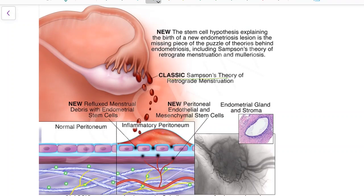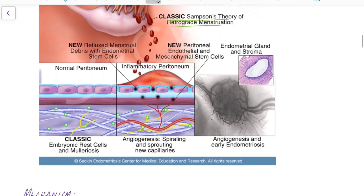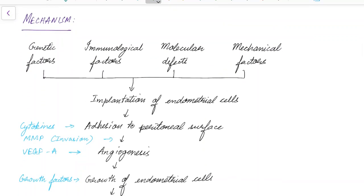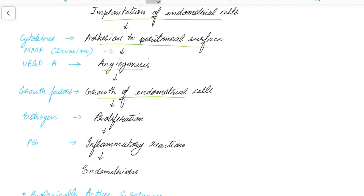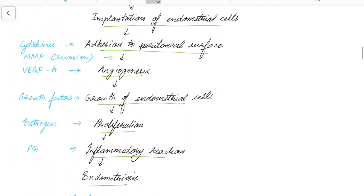This picture shows Sampson's theory of retrograde menstruation and also the stem cell hypothesis causing endometriosis. The detailed mechanism involves genetic factors, immunological factors, molecular defects, and mechanical factors causing implantation of endometrial cells in ectopic sites. These implanted cells then adhere to the peritoneal surface, followed by angiogenesis, growth and proliferation of endometrial cells, inflammatory reaction, and finally endometriosis.